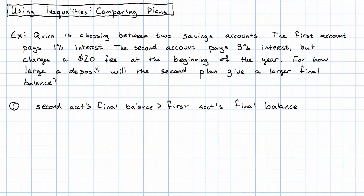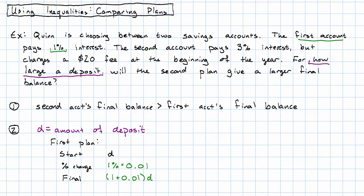So we need to write expressions for each account's final balances. What's our variable going to be? The question is asking us for how large a deposit. So I'm going to say D equals the amount of deposit. We're talking about interest here, which represents a percent increase. So for the first plan, the starting balance is just going to be D, the initial deposit. The percent change for the first account is 1%, which is 0.01. And therefore the final balance will be 1 plus 0.01 times the initial deposit.